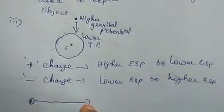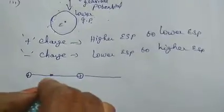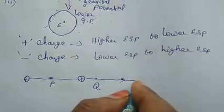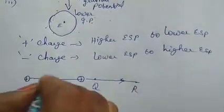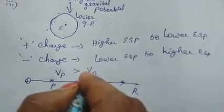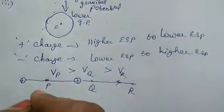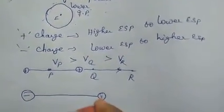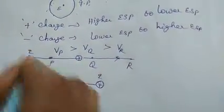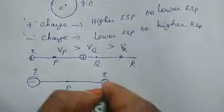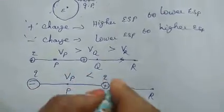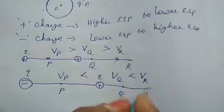This is illustrated with a diagram. For a positive charge, we take points P, Q, and R in the electric field. VP is always greater than VQ, and VQ is always greater than VR. For a negative charge (minus Q), with points P, Q, and R, VP is always less than VQ, and VQ is always less than VR.